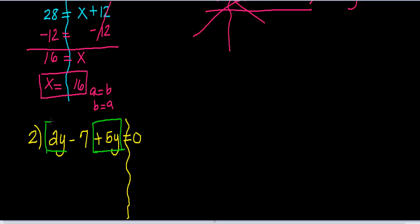What do I do with like terms? I combine them. So this is 2 bananas plus 5 bananas. That makes a total of 7y. Minus 7 comes down equals 0. And now I have a two-step equation.